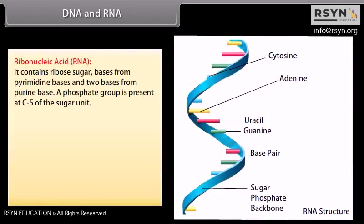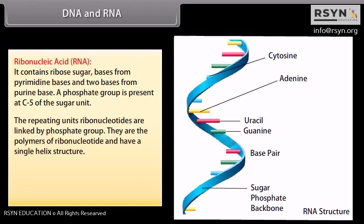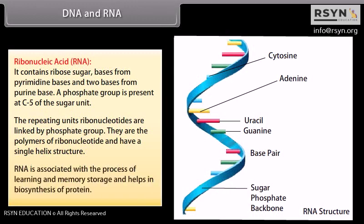RNA contains ribose sugar, two bases from pyrimidine bases, and two bases from purine bases. A phosphate group is present at C5 of the sugar unit. The repeating ribonucleotide units are linked by phosphate groups, forming polymers of ribonucleotides with a single helix structure. RNA is associated with the process of learning and memory storage and helps in biosynthesis of protein.